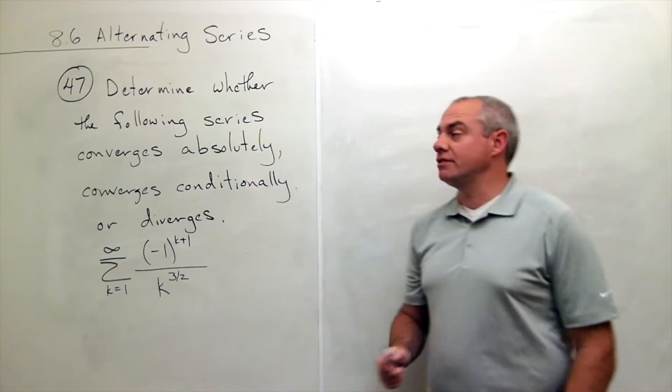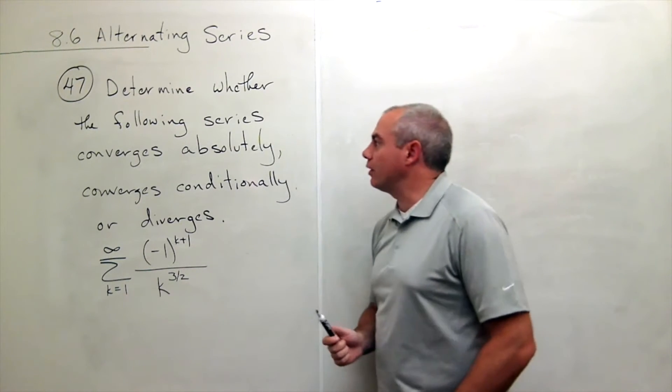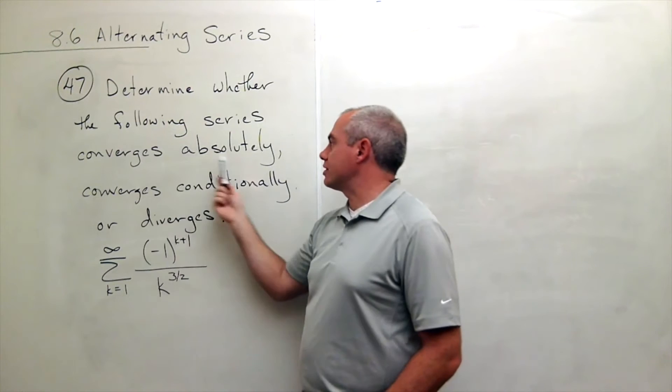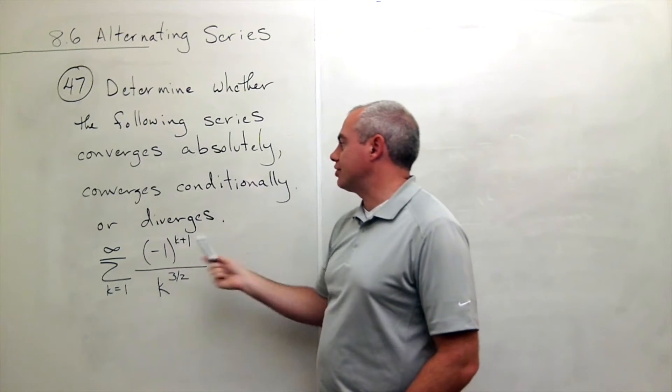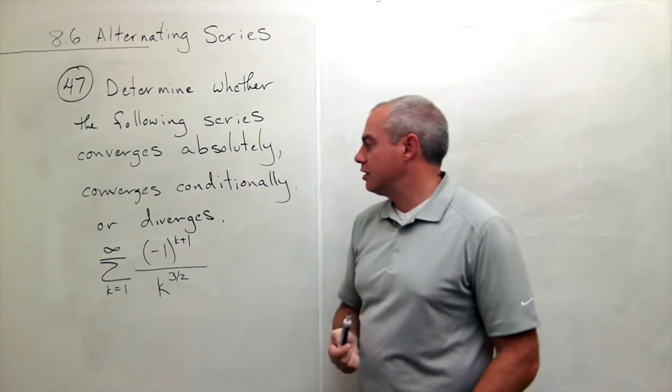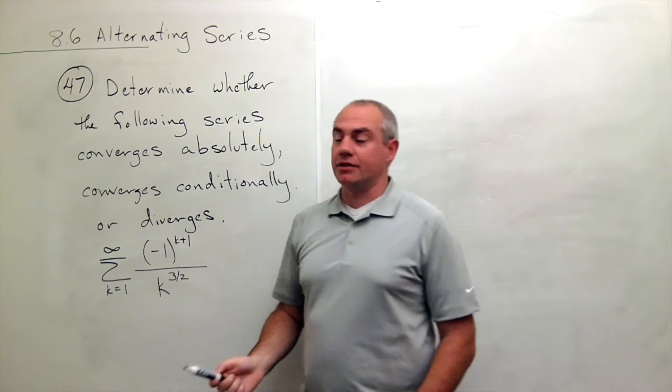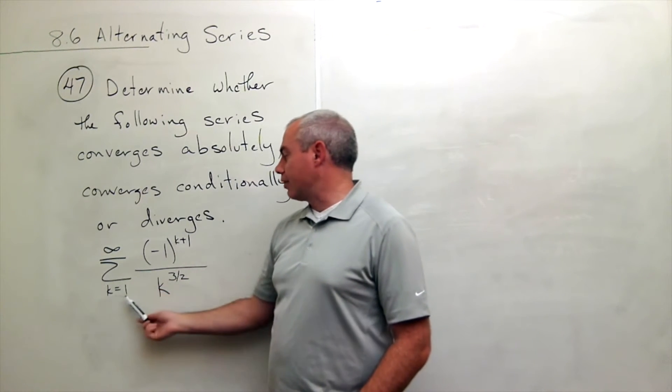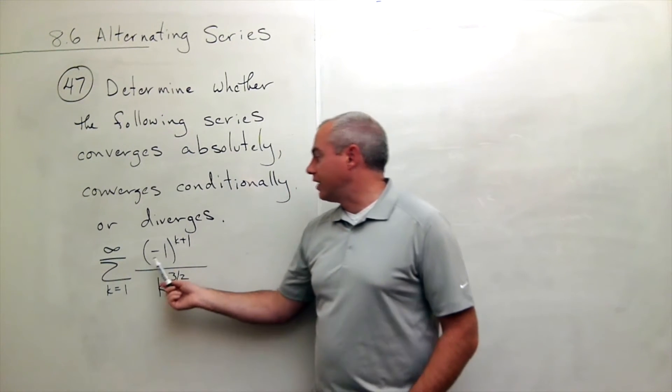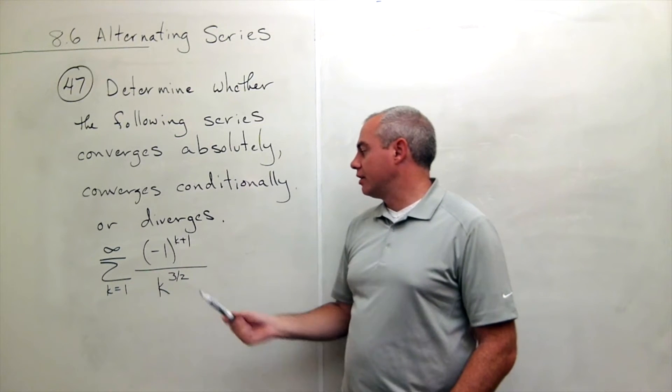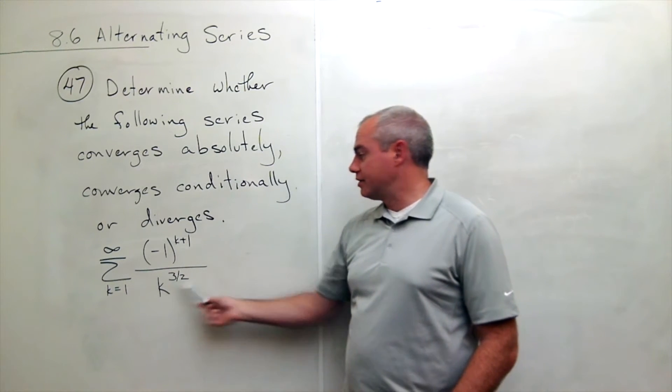In problem number 47, we'd like to determine whether the following series converges absolutely, converges conditionally, or diverges. The series we'd like to look at is the sum k going from one to infinity of negative one to the k plus one, divided by k to the three over two.